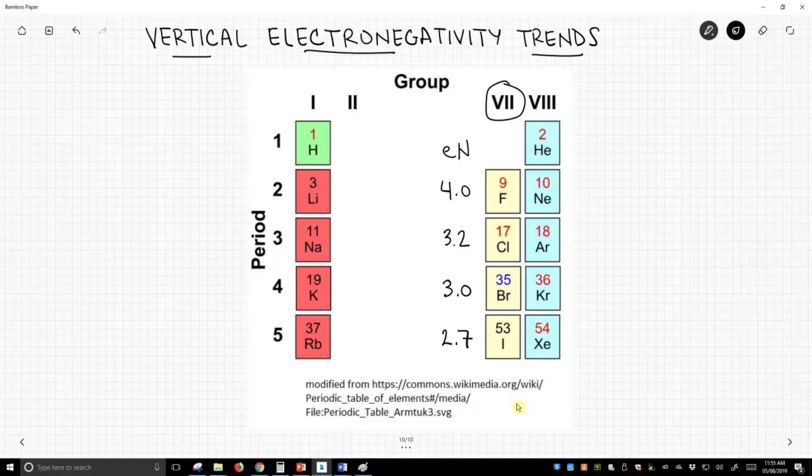It decreases as we go down the periodic table, and what's interesting is that for all these elements, the effective nuclear charge is equal to seven. They're in group number seven. They have seven valence electrons and their effective nuclear charge equals seven. So this is not driven by a change in effective nuclear charge.